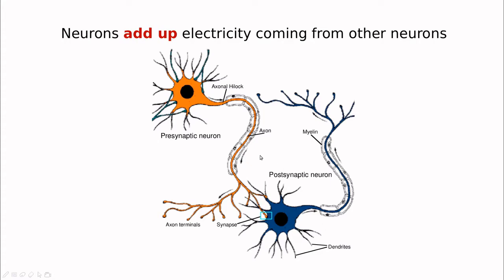So in a sense, a neuron combines electricity coming from other neurons, adds up all the electricity and creates a new response.